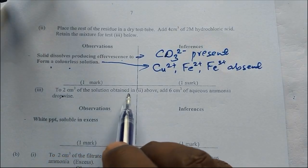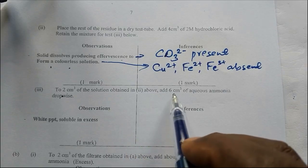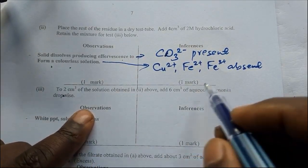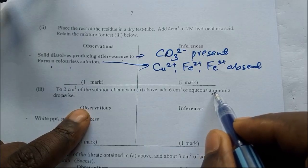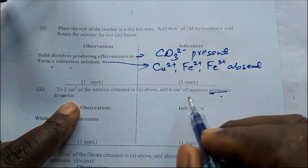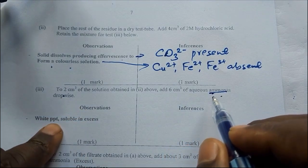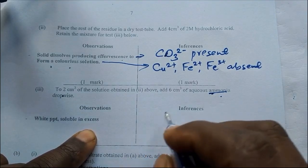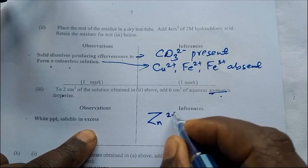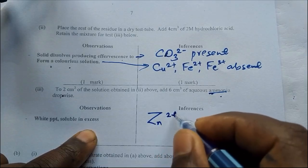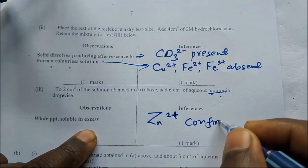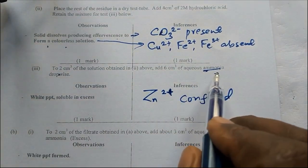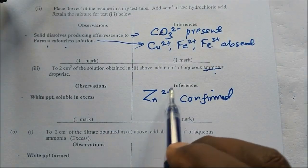To 2 cm³ of solution obtained in Roman 2 above, add 6 cm³ of aqueous ammonia dropwise until in excess. It is true that whenever you add an ammonia solution, a white precipitate is formed soluble in excess, which dissolves in excess. Then it is always confirmed. That is zinc is confirmed. Because we said it is present. Now we can write here confirmed or you can write present. So because aqueous ammonia is actually used to test for, to confirm Zn²⁺ ions.